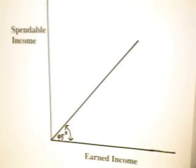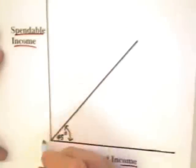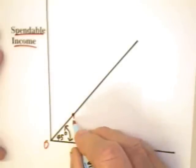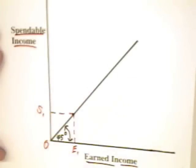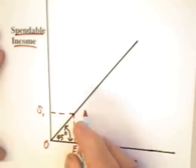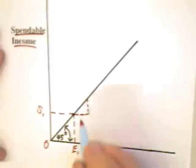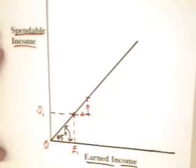We can explain this phenomenon more carefully with resort to a graph that does not take on the shapes of the supply and demand curves that we've been using in past videos. In this graph, we have earned income on the horizontal axis, spendable income on the vertical axis. We have a line going out of the origin at 45 degrees. Along this 45 degree curve, the implicit or explicit tax rate is going to be zero. The reason is that the spendable income of the worker goes up by the exact same amount as the earned income.